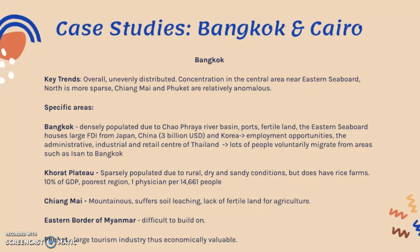Chiang Mai has a fairly densely populated area; however, it is mountainous, suffers from soil aging, and has a lack of fertile land for agriculture. Its development and potential as another core in Thailand will be discussed later. The western border with Myanmar is difficult to build on. Finally, areas like Phuket have a large tourism industry, making them economically valuable and skewing population distribution toward those areas.